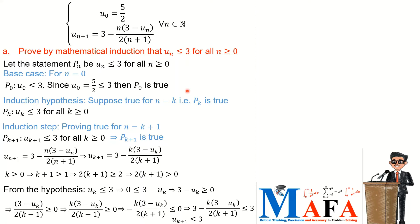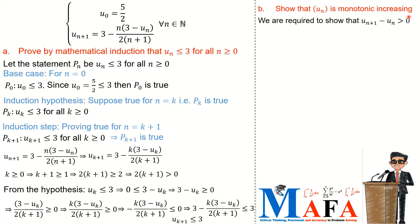We conclude: since it was true for n equal to 0, and it is true for n equal to k+1 assuming it is true for n equal to k, it is true for all n greater than or equal to 0. Part B asks us to show that u_n is monotonically increasing, so we need to show that u_{n+1} minus u_n is strictly greater than 0.